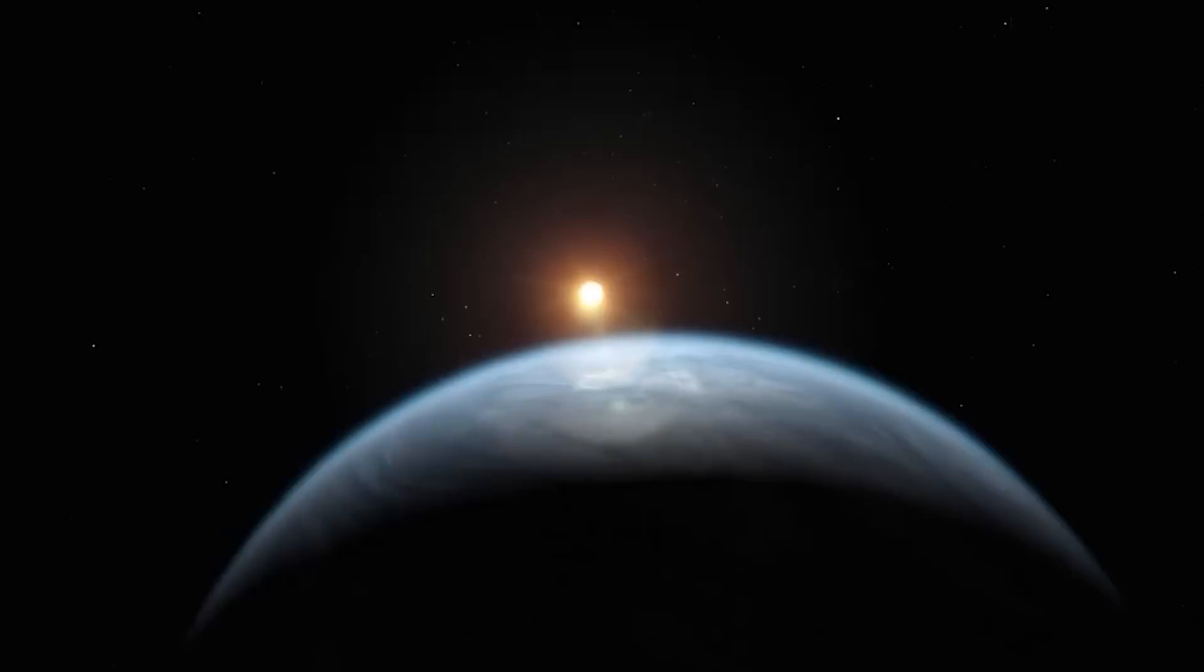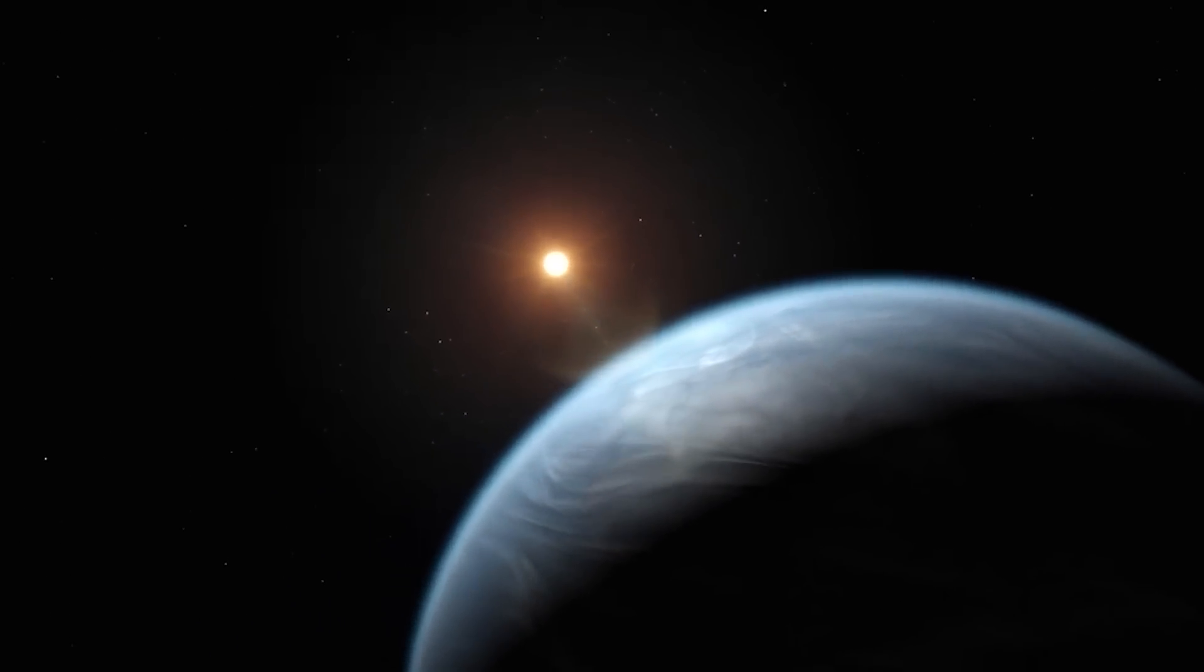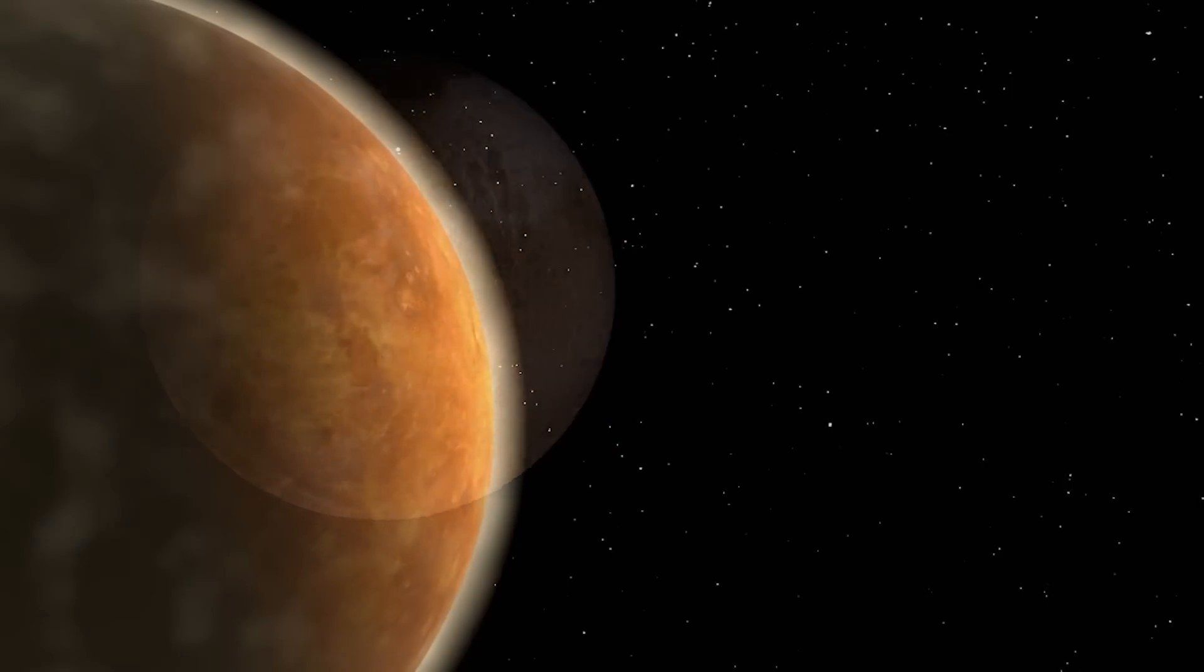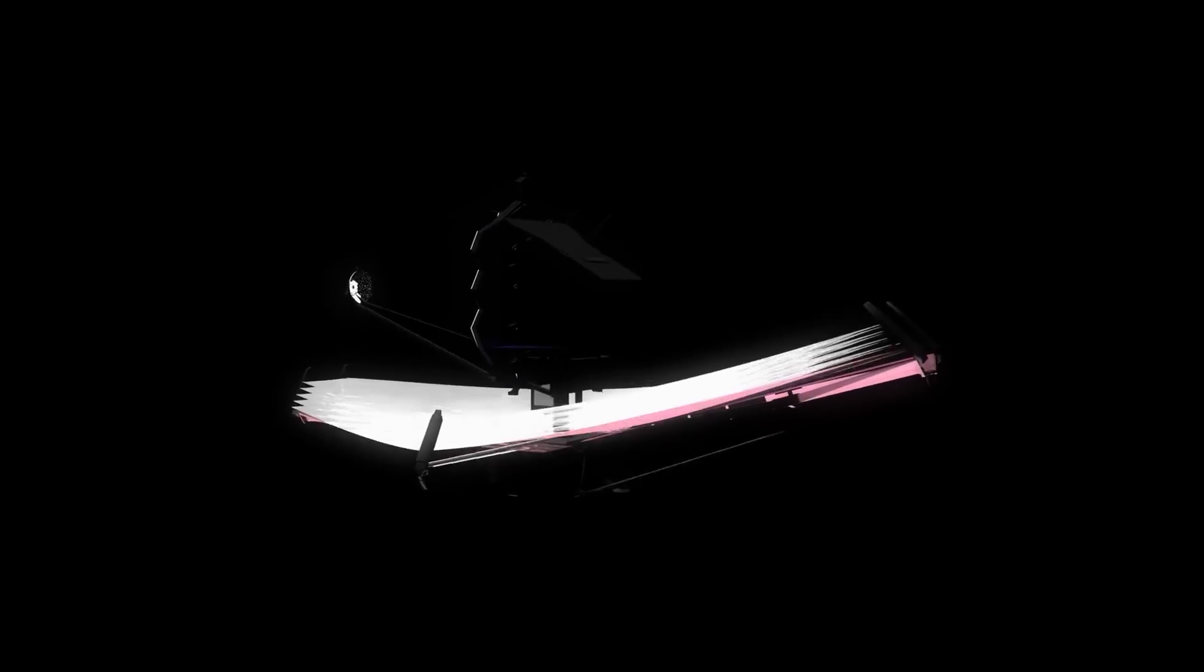But that may not be the case if the planet's atmosphere has clouds, so we'll have to wait and see. It may take up to 30 transits to affirm the existence of a planet with a hazy atmosphere such as Venus. Although it will take longer, the Webb Telescope can still accomplish this.